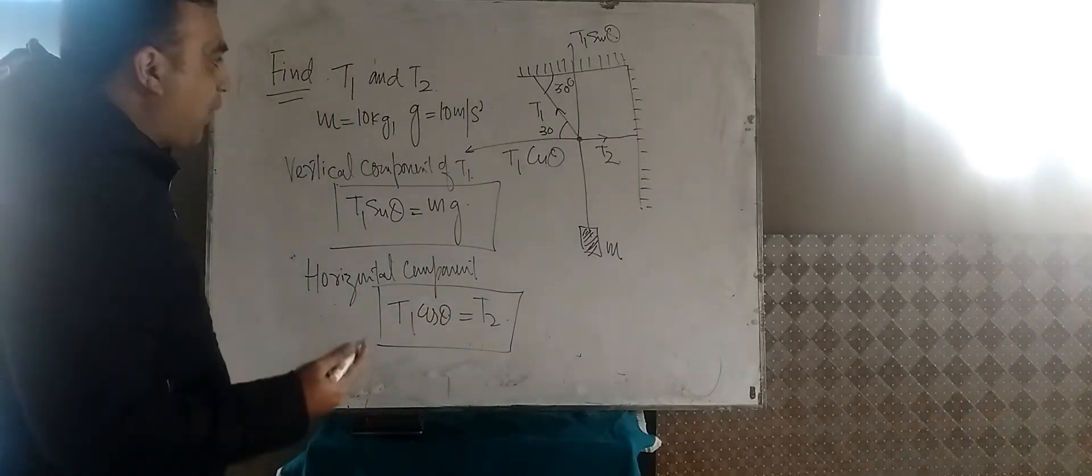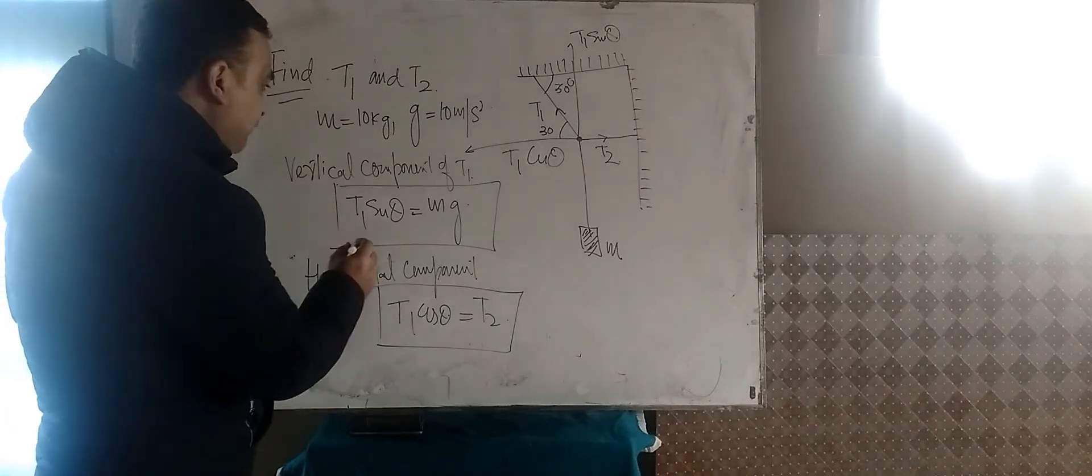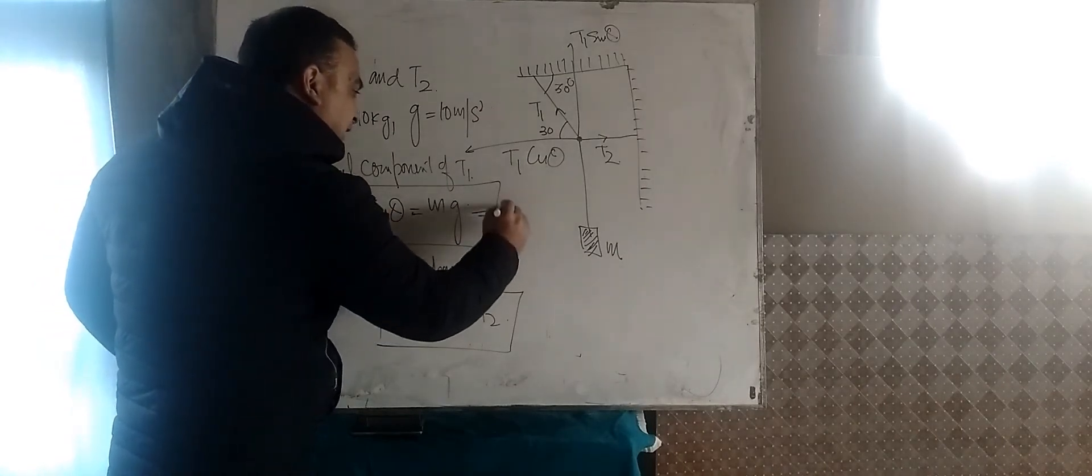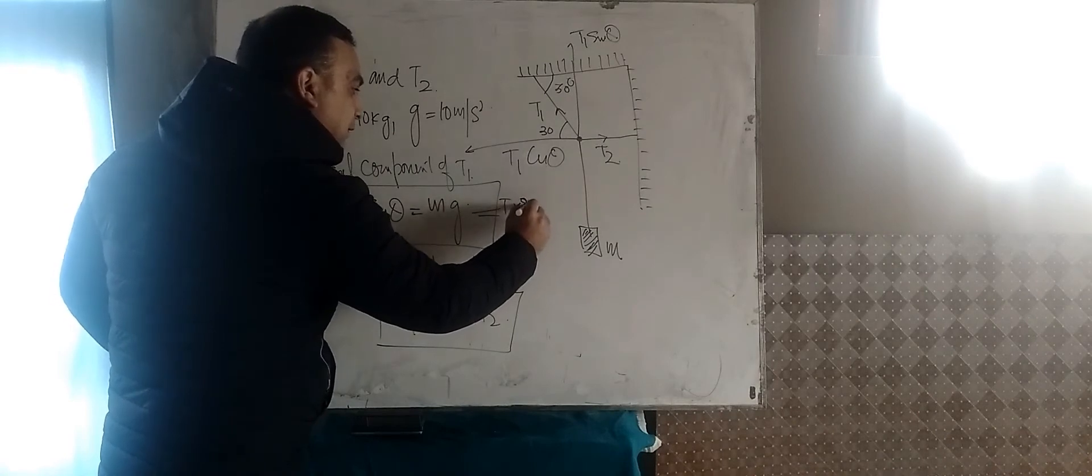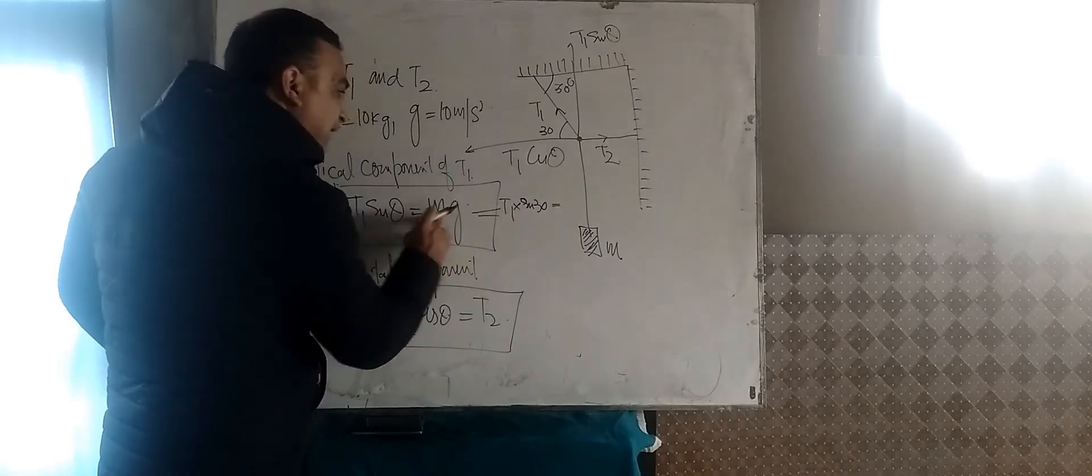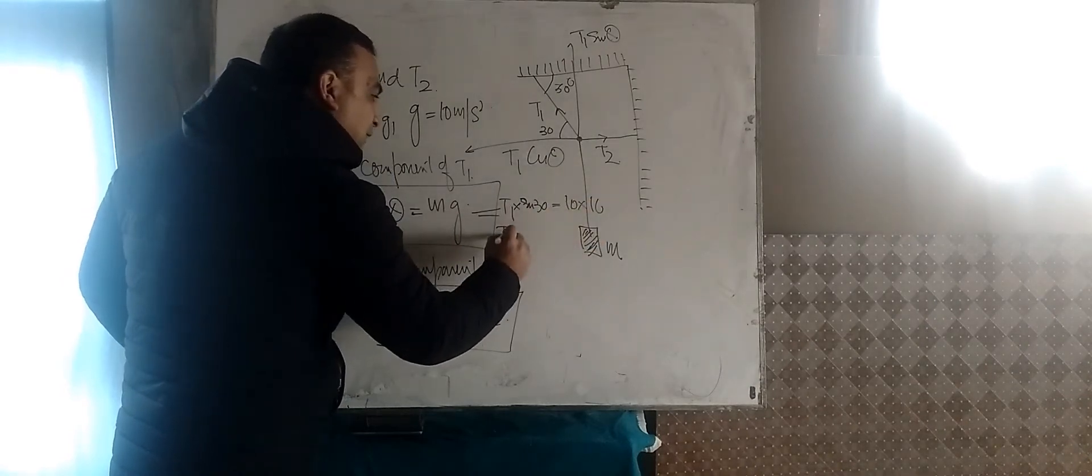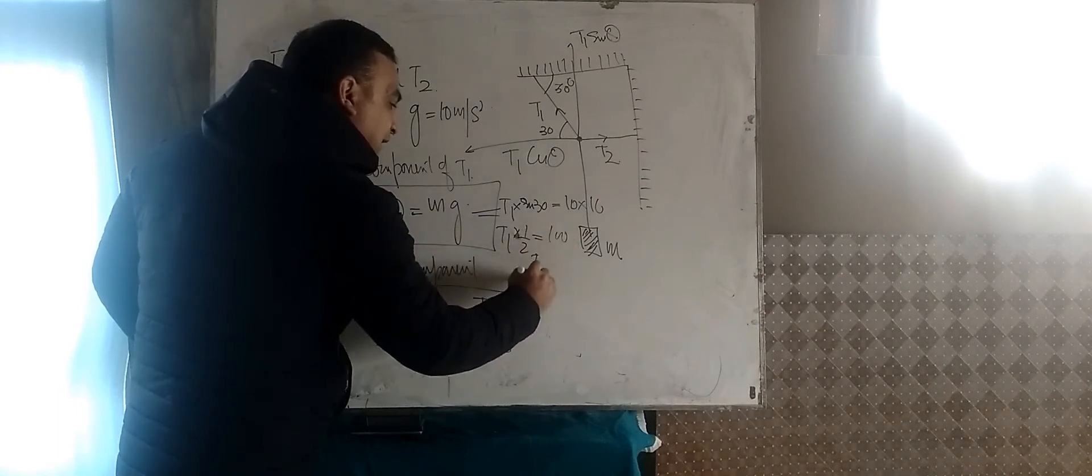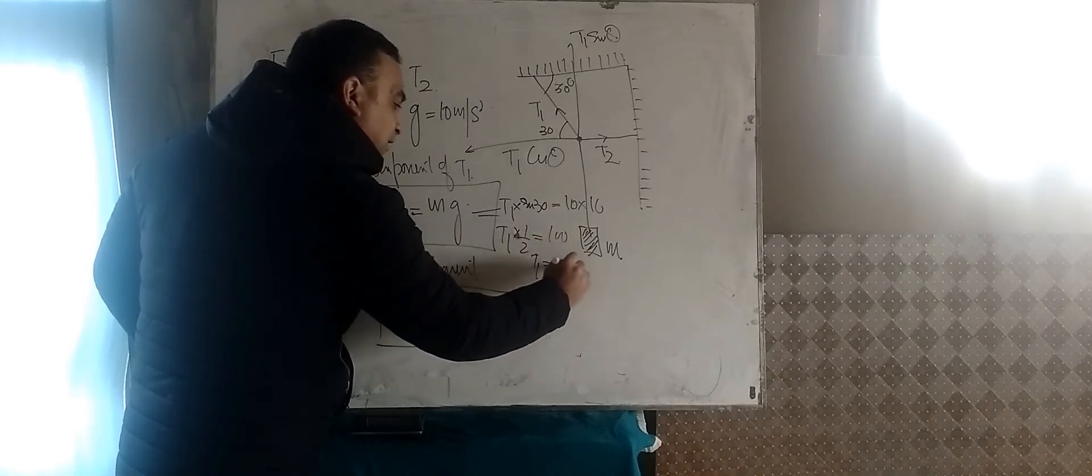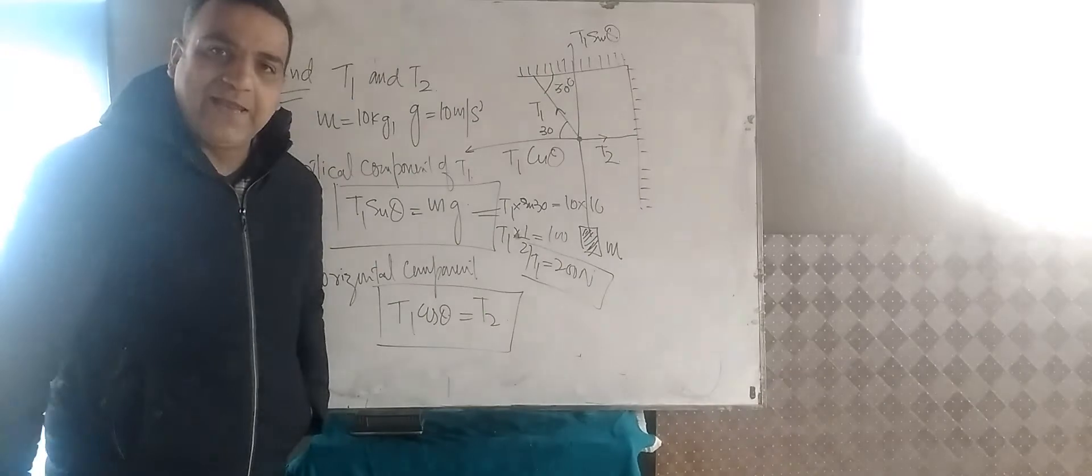Now I think the problem is solved. We can calculate T1 as well as T2. You can see in this equation itself, T1 sin theta will be sin 30, and this is equal to M is 10 into G is to be taken as 10. T1 must be equal to, so it is sin 30 is 1 by 2. So this is 100. So T1 immediately comes out to be 200 Newton.